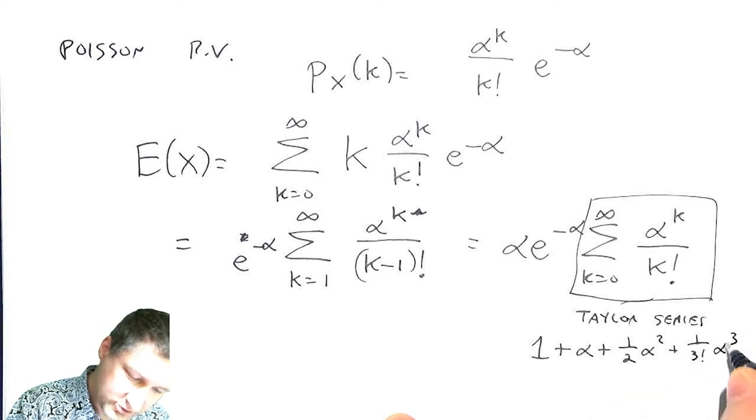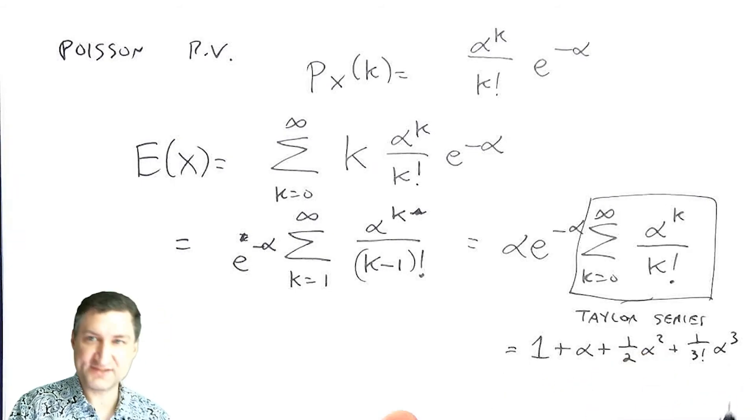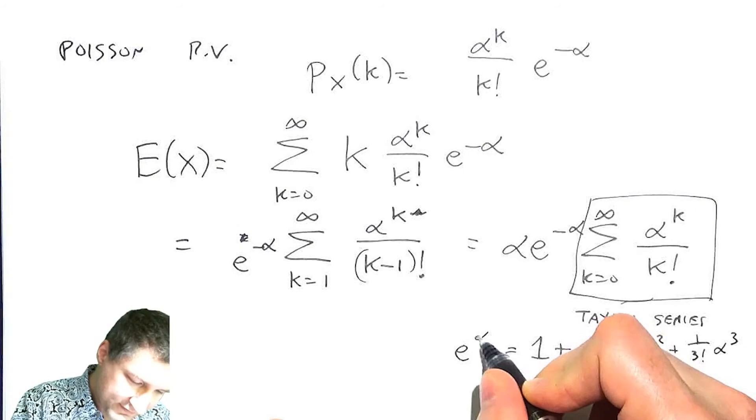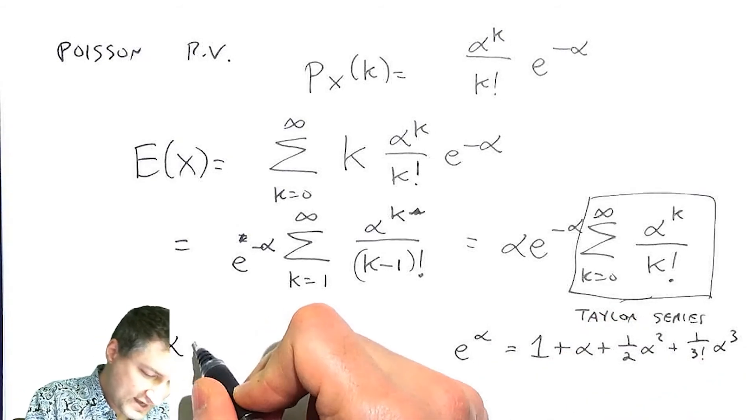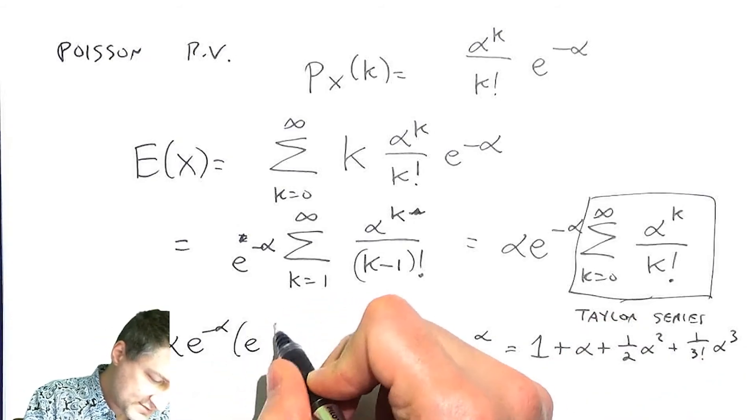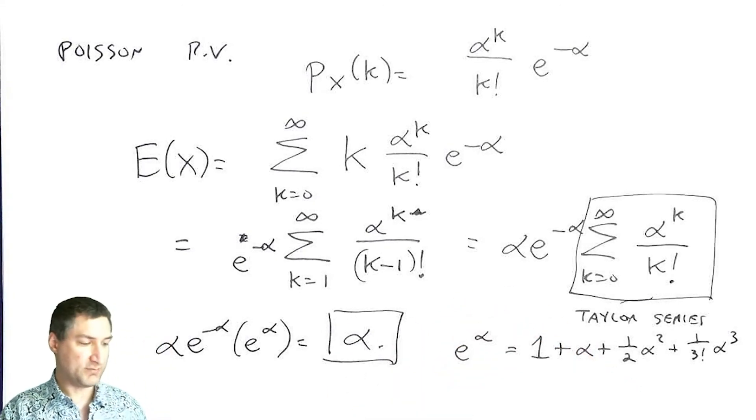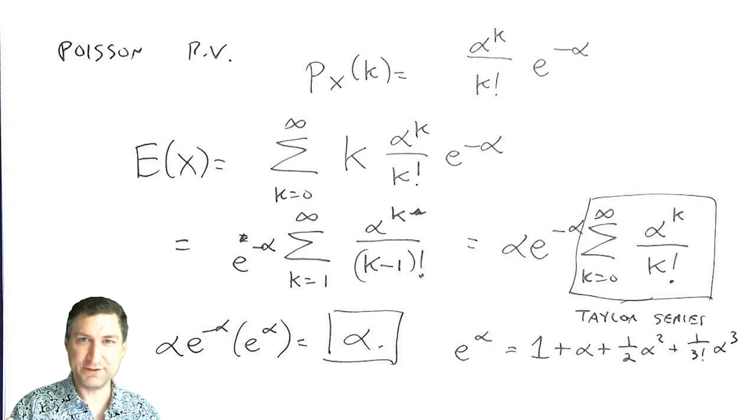And maybe you remember this is exactly the expansion in a polynomial form for e to the alpha. So the overall thing is alpha e to the minus alpha times e to the plus alpha equals alpha. So the expected value for the Poisson random variable is in fact alpha. And that makes sense because that's actually how we defined alpha in the first place. It was the average number of expected arrivals that we see in a given interval.